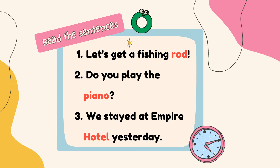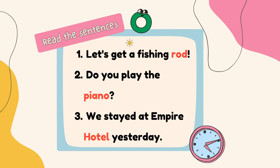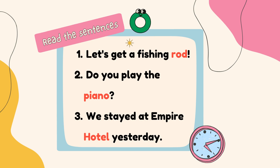Read the sentences. First, we'll start with the simple O. Number one: let's get a fishing rod. Number two: do you play the piano? Number three: we stayed at Empire Hotel yesterday.